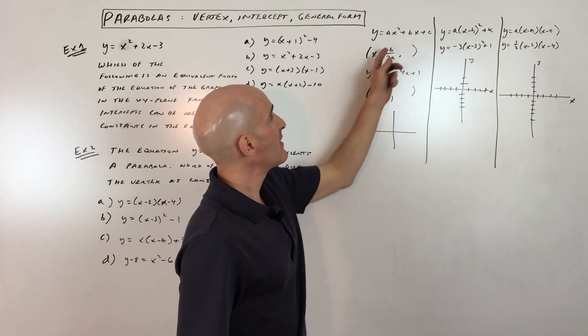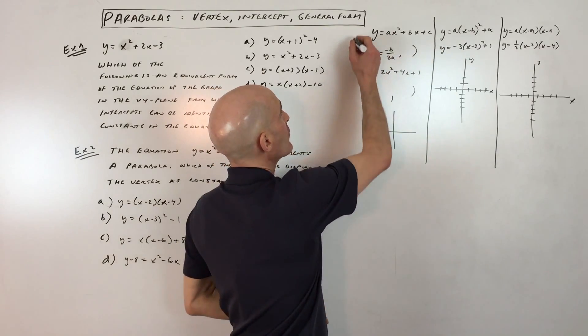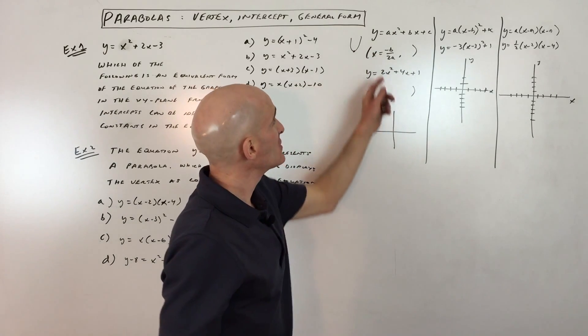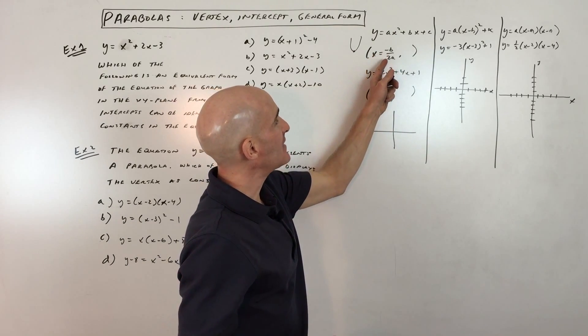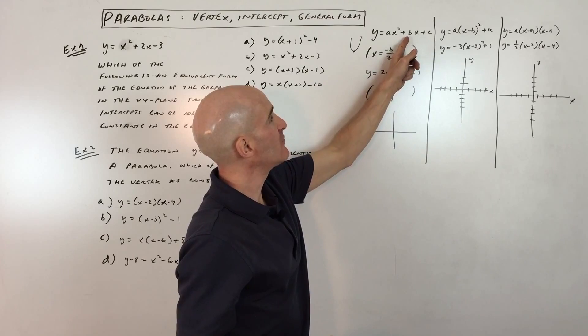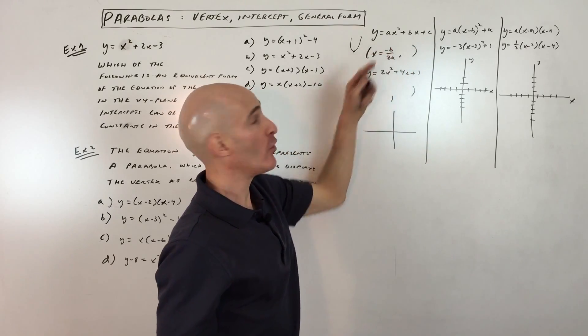So the way you would find the vertex, which is the point where the parabola bends or turns, is you would use this formula x equals negative b over 2a, so the opposite of b over two times the leading coefficient.